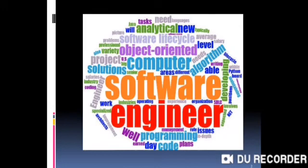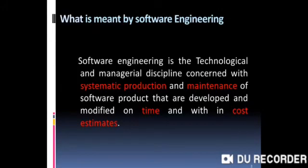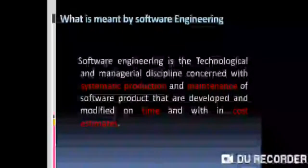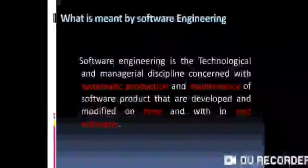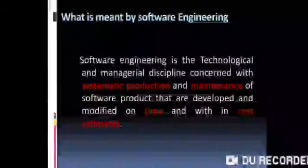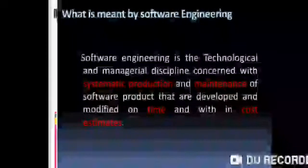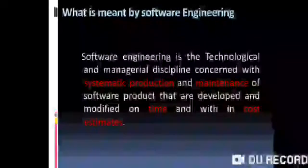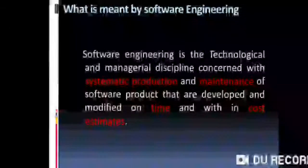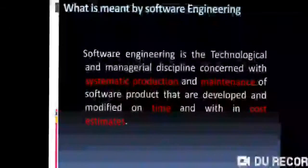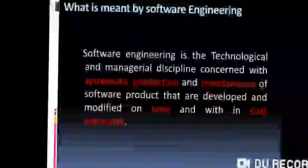So, software engineer or software developer — what is meant by software engineering? A software engineer is the technological and managerial discipline concerned with systematic production and maintenance of software products that are developed and modified on time and within cost estimates.